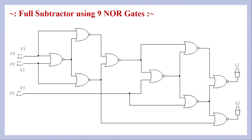This is the logic circuit of a full subtractor using the minimum number of NOR gates. We need nine NOR gates to implement a full subtractor — this has already been simulated. The three binary inputs are X, Y, and BIN. The output of each NOR gate is labeled A, B, C, D, E, F, G, with G being the difference output and BOUT the borrow output.